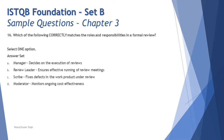Question 16: which of the following correctly matches the roles and responsibilities in a formal review process? You have to be thorough with your syllabus content. There's no justification needed — it's a straightforward mapping of what role has what responsibilities. The four options are: A — manager decides on execution of reviews; B — review leader ensures effective running of review meetings; C — scribe fixes the defect in the work product under review; D — moderator monitors ongoing cost effectiveness.